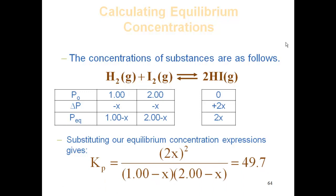Plug in those values, you get (2X)² / [(1 minus X)(2 minus X)] = 49.7. Now notice that my initial concentrations of pressures are different. So this is not going to end up being a perfect square. Since I have two different values, this is going to be a case where I'm going to have to use the quadratic formula to solve for my problem.